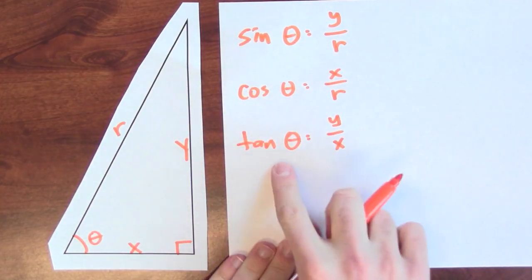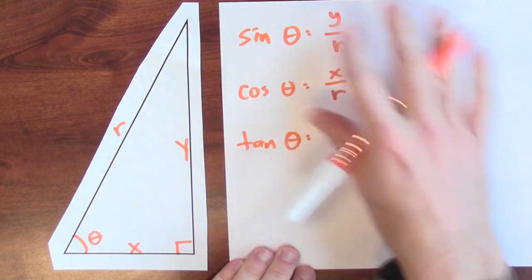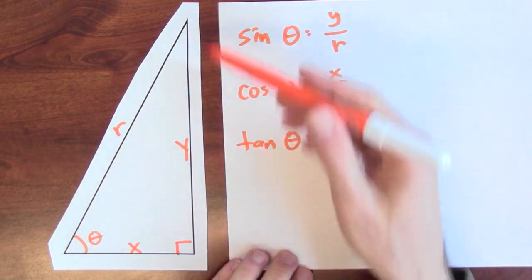This is the sine, cosine, and tangent of this angle theta, and they're all just defined in terms of ratios of side lengths.